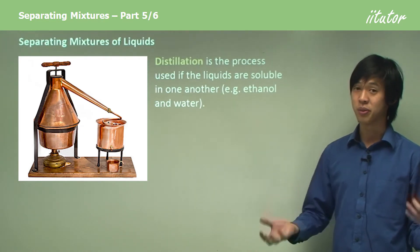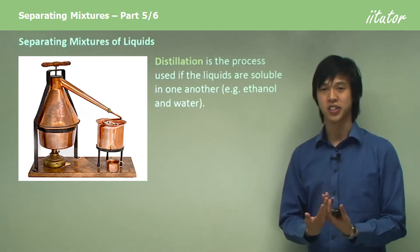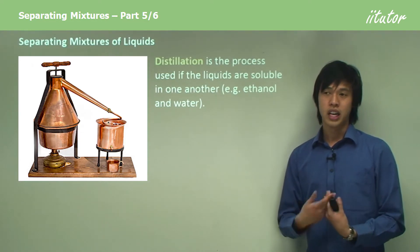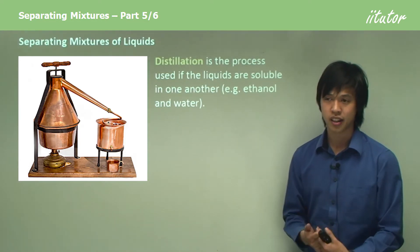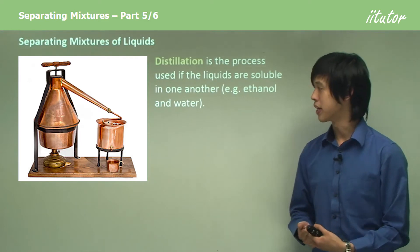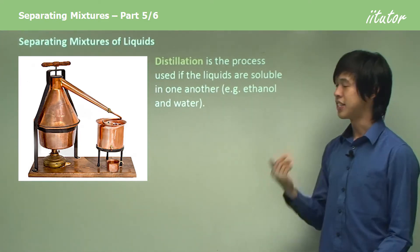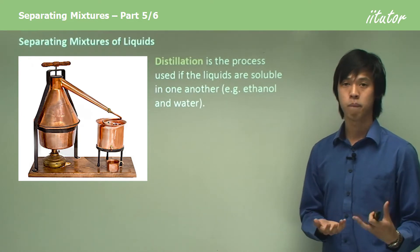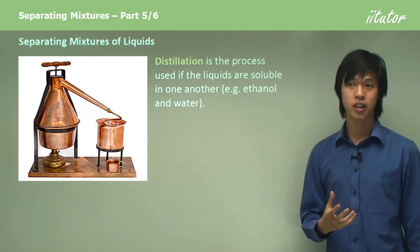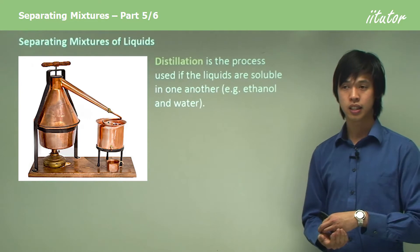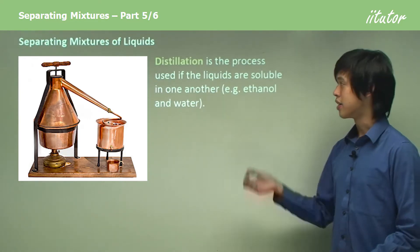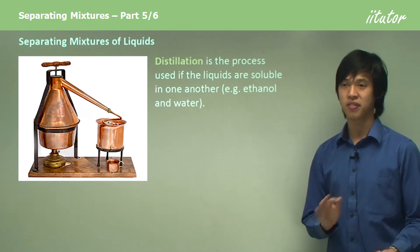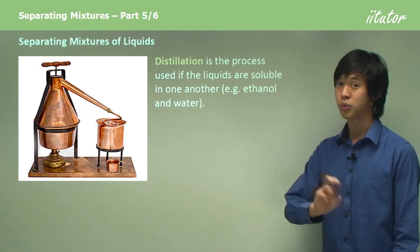What if we have two liquids mixed together? For instance, ethanol and water mix together - how do we separate them? We can use something called distillation. This works if the two liquids are soluble in one another. Ethanol and water are actually soluble in one another, so we can use distillation to separate them. This won't work well if they don't dissolve in each other, like oil and water.